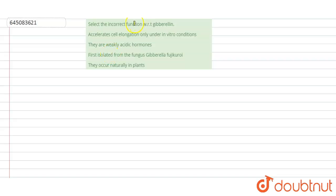Question is: select the incorrect function with respect to gibberellin. Options are: accelerate cell elongation only under in vitro conditions; they are weakly acidic hormones; first isolated from the fungus Gibberella fujikuroi; they occur naturally in the plants.